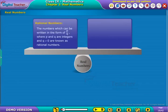Rational Numbers: The numbers which can be written in the form of P by Q where P and Q are integers and Q not equal to 0 are known as rational numbers.